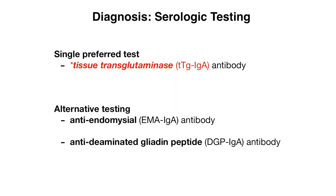Let's move on to the diagnosis of celiac disease, beginning with serologic testing. The single preferred test is a tissue transglutaminase (TTG) antibody level, as it is highly sensitive and specific compared to other available labs. Alternative tests include an anti-endomysial antibody level and an anti-deaminated gliadin peptide antibody level. Gliadin is a component of gluten, so we are checking an antibody directed against that antigen.